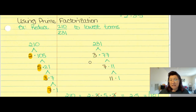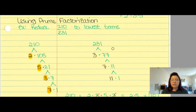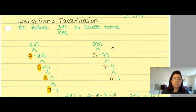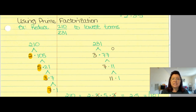Now I can do the same breakdown of 231. 231 is a little harder to see what's inside it. It's not even, so a 2 doesn't live inside it. It doesn't end in 0 or 5, so a 5 doesn't live inside it. But here's a cool little trick: add the digits of the number. 2 plus 3 plus 1 is 6. If that added result is divisible by 3, then the original number is divisible by 3. So 2 plus 3 is 5, plus 1 is 6; 6 divided by 3 is 2. Therefore, 231 is divisible by 3.